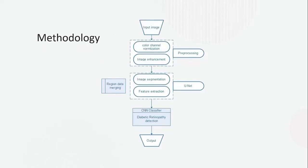Here we can see the flowchart of the work: classification of Diabetic Retinopathy starting from input image, to preprocessing — which includes color channel normalization, contrast enhancement, and noise removal — then region data merging with image segmentation and feature extraction using U-Net, then the classifier for Diabetic Retinopathy detection, and finally the output.